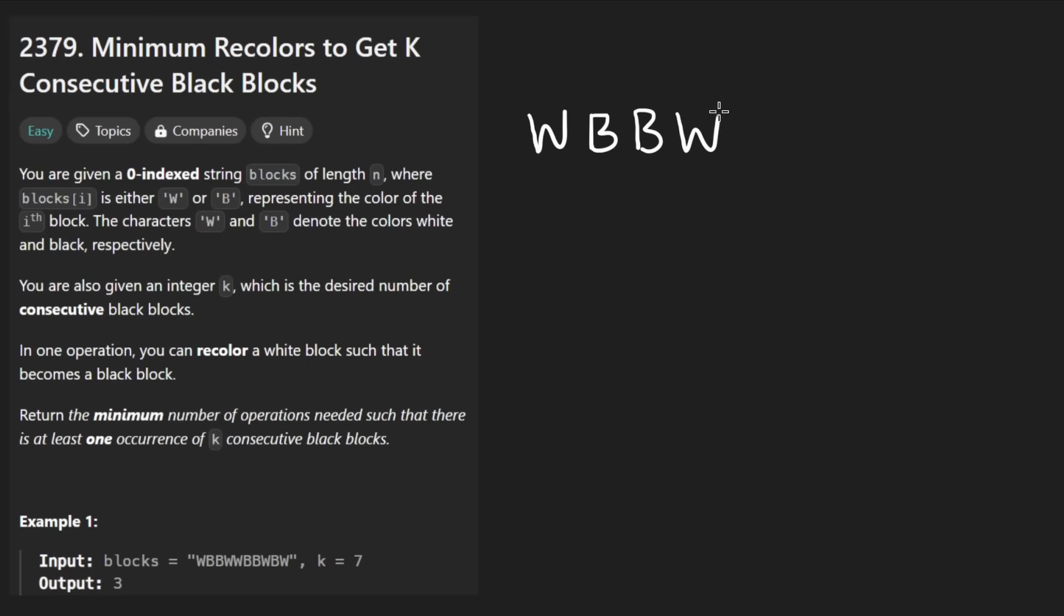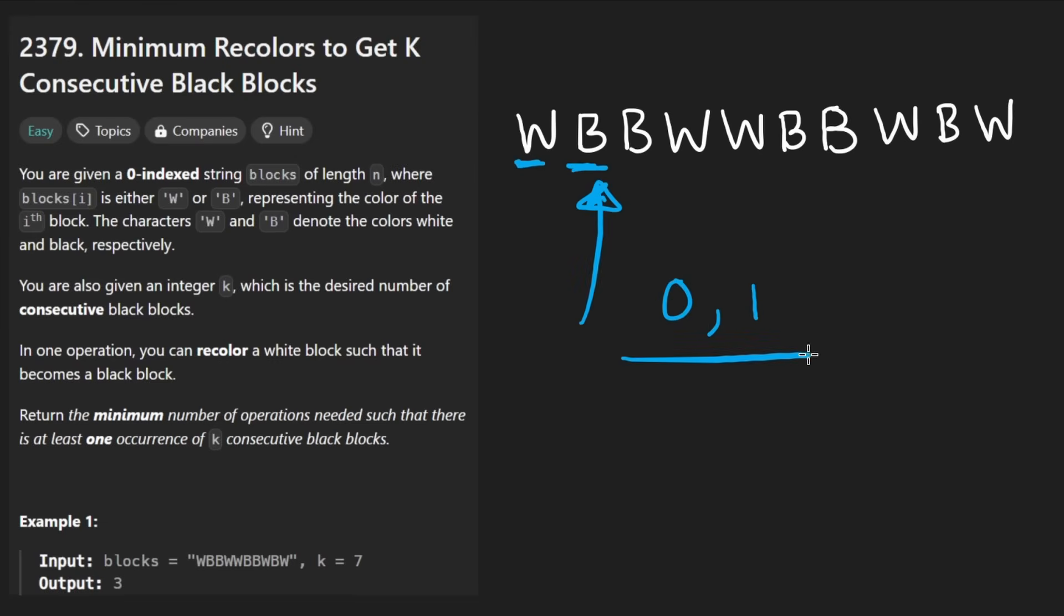So let's say this is the input. Basically it's going to be a string of W and B characters. Why did they choose that? I don't know, they could have done zeros and ones, it doesn't really matter.